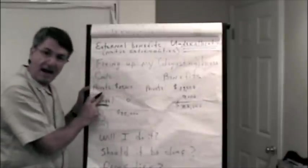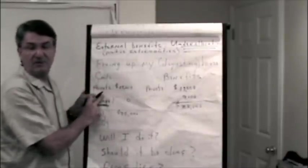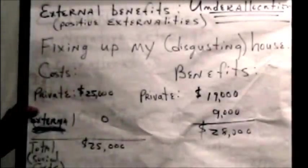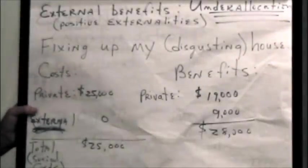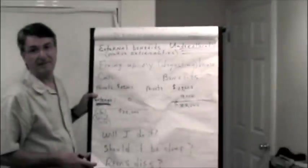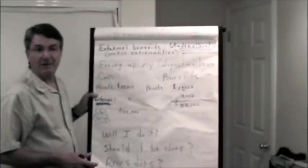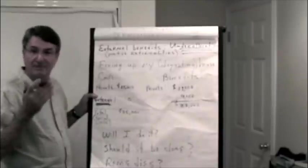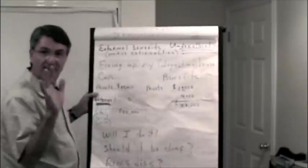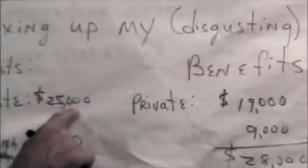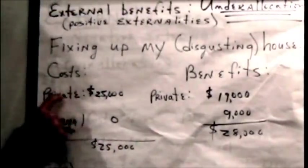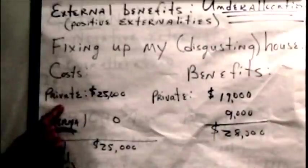For instance, I used to live in a rotten house. The plaster was falling off the outside. The shingles were falling off the roof. The bushes were a mess. The grass was a mess. And my neighbors hated me. And I refused to clean it up because I'm a trained economist and I did the calculations. Here were the calculations. To fix up my house was going to cost me $25,000. That was my cost and I was going to pay it all. It was a private cost to me.